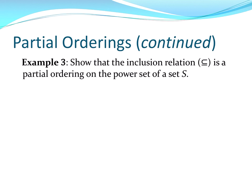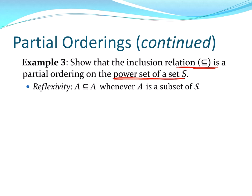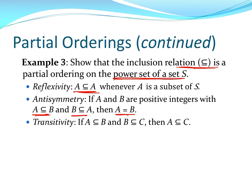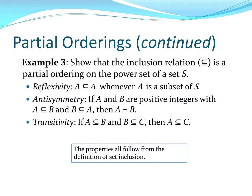Now the relation is the inclusion relation — that is, the subset relation — and we're looking at the power set of a set S, meaning all possible subsets of S. It is reflexive because every set is a subset of itself. Antisymmetric: A ⊆ B and B ⊆ A implies A = B, from the definition of set equality. And transitivity: if A ⊆ B and B ⊆ C, then A ⊆ C. All of these follow from set inclusion, chapter 2.